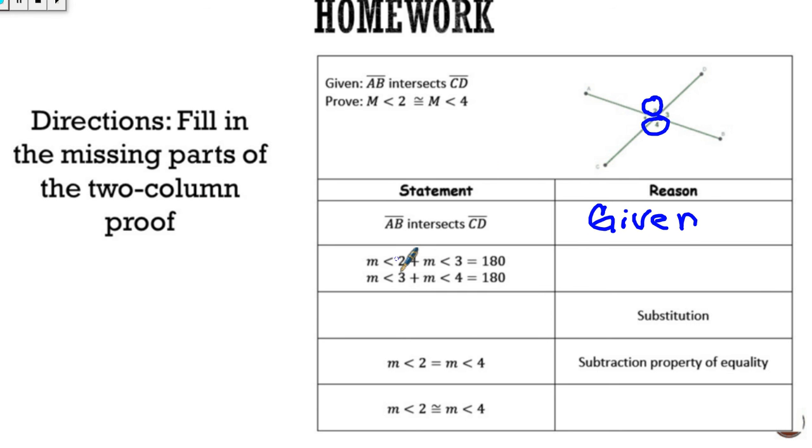Then it says that the measure of angle 2 plus the measure of angle 3 equals 180, and the measure of angle 3 plus the measure of angle 4 equals 180. That is called linear pairs. That's the reason and why. Linear pairs, remember I told you, are the ones that are right beside each other.